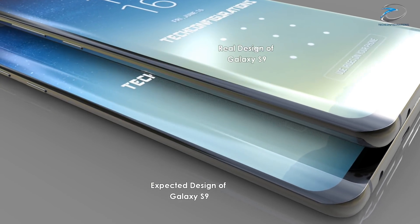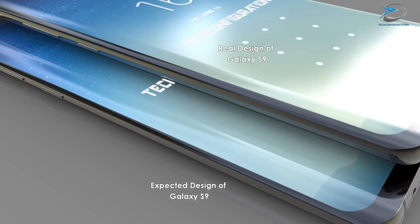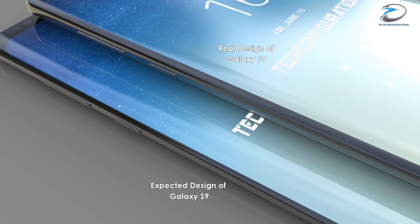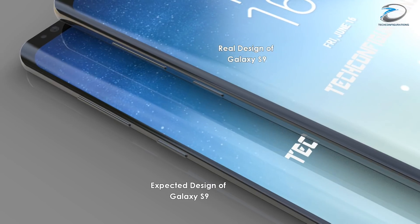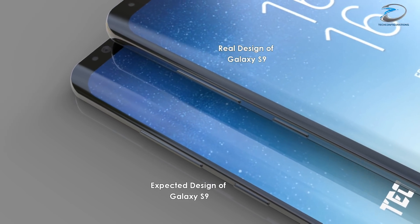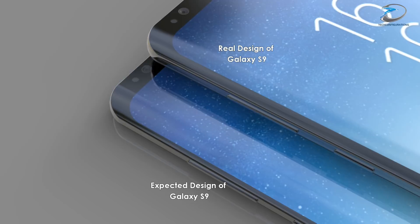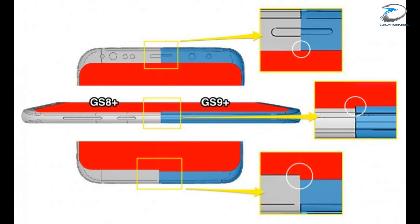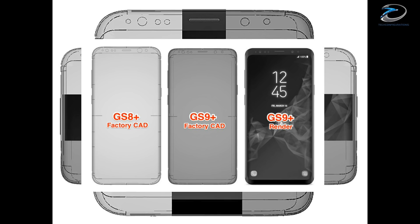As per the latest leaks, the Galaxy S9 will undergo some significant changes in design, and the most important one will be the changes in the curvature at the edges. It seems the new S9's curves at the edges are much less evident than last year. This is also verified by the factory CAD drawings of the finalized Galaxy S9 Plus compared to the schematics of the S8 Plus, which has also been published by AllLeaks.